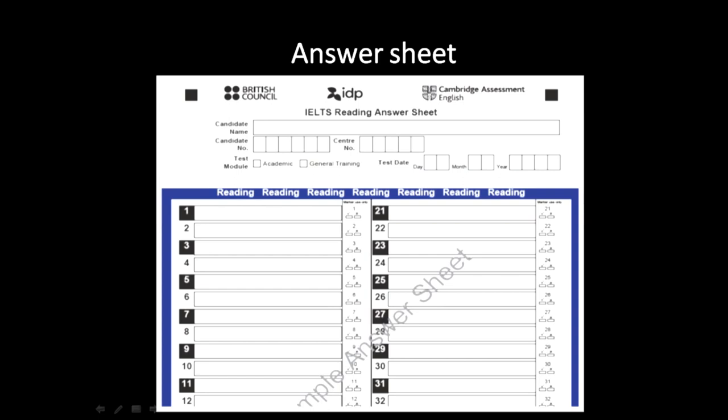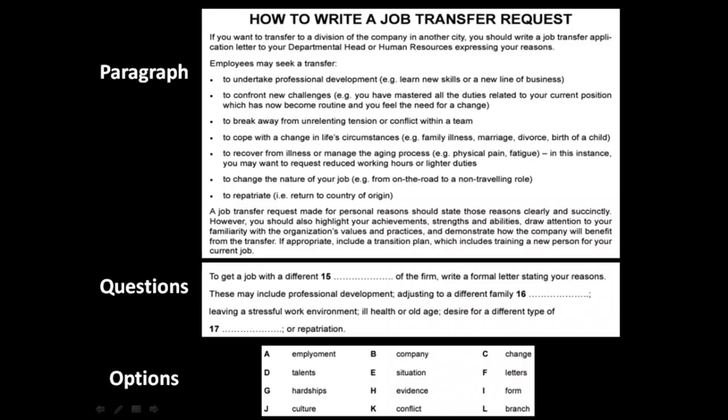This is how an IELTS reading test sheet looks like. Moving on into the summary completion question, I'll follow the same approach as last time. Here's the paragraph, here are the questions, and below are the options. I've only taken three questions because of time limitation, but I'll post the link to the whole exam. I'll give you two minutes to go over the paragraph and the questions and try answering them, then we'll go through it together and solve it.